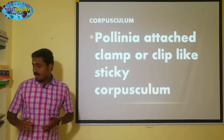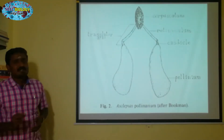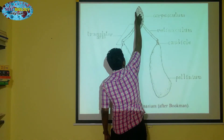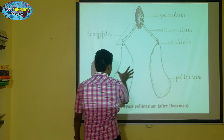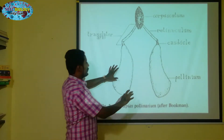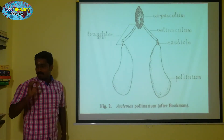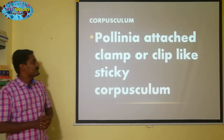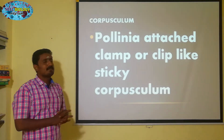The polyneum — it is a clamp-like structure, a clamp or clip. This is the corpus column. The corpus column is a clamp or clip-like structure, and it is sticky.